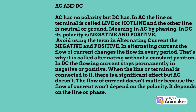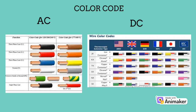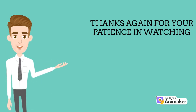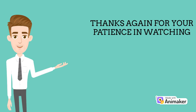In DC, the flowing current stays permanently in negative or positive. When the line or terminal is connected to it, there is a significant effect, but AC doesn't have this because the flow of current doesn't depend on polarity — it depends on the line or phase. Always follow the color code. We will follow this guide so that we don't violate electrical law. Thanks again. I hope you learned even a little knowledge from this video. See you next time. Happy holiday everyone and keep safe.